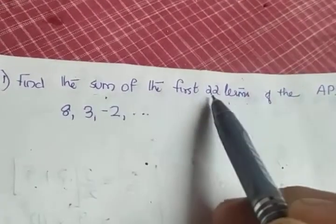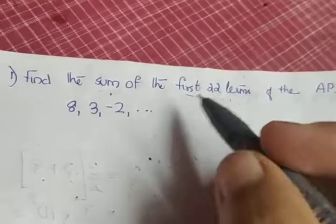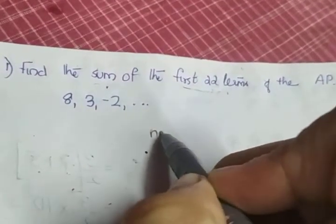The question is to find the sum of first 22 terms. So 22 will be the value of n. N is directly given as 22.